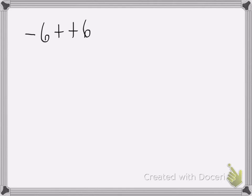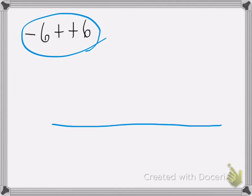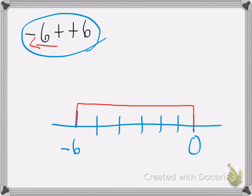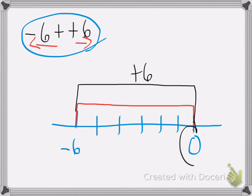Here I have a negative 6 plus a positive 6. When I have two numbers that are opposites of each other — a negative 6 and a positive 6 are exactly opposite — then I know my answer is going to be 0. So starting at 0, I go to the left 6 places: 1, 2, 3, 4, 5, 6. Then I go to the right 6 places: 1, 2, 3, 4, 5, 6. My answer is 0. When I add opposite numbers, a negative and a positive of the same number, my answer will always be 0.